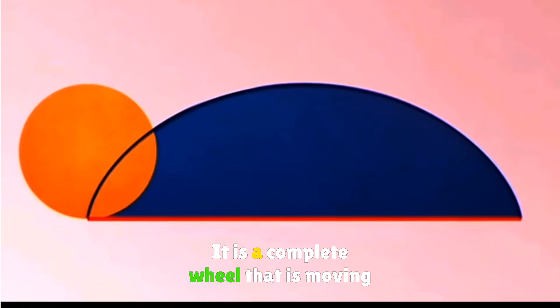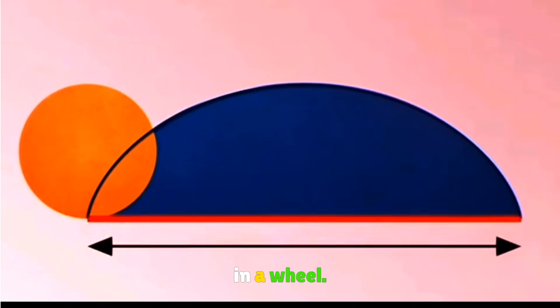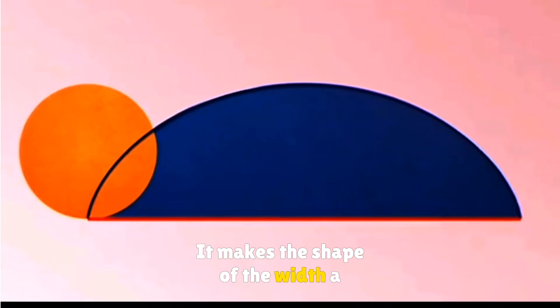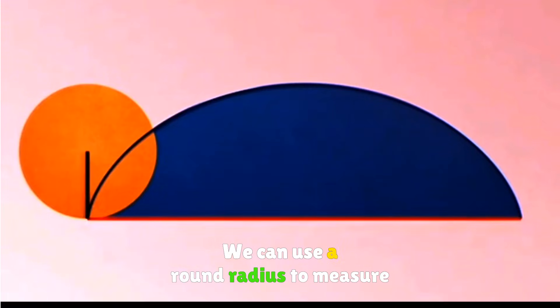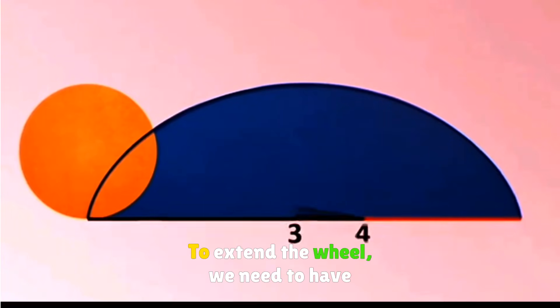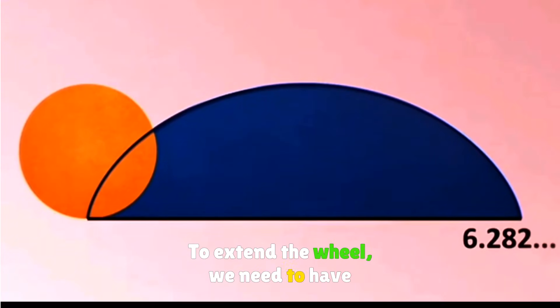It is a complete wheel that is moving. It makes the shape of the cycloid. We can use a round radius to measure. To extend the wheel we need to have a little more than six triangles.